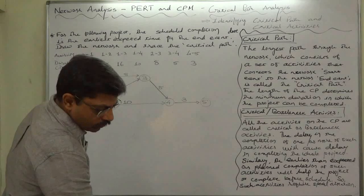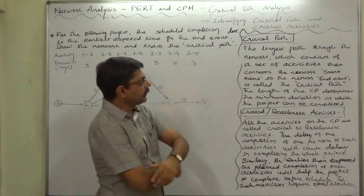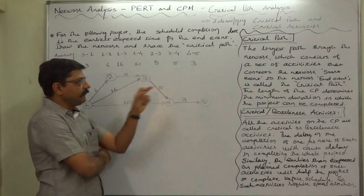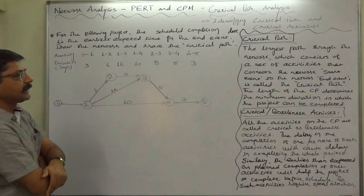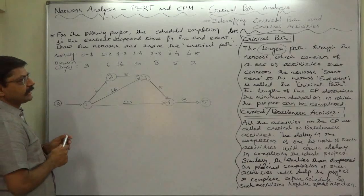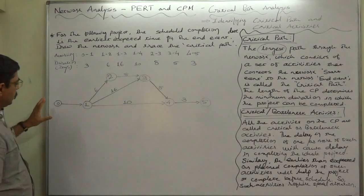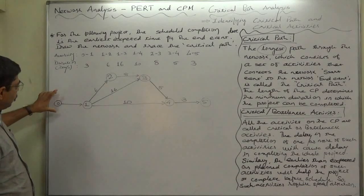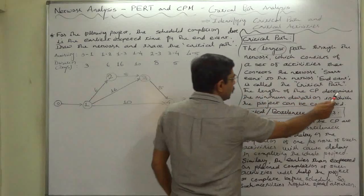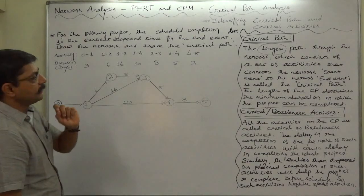Now the new point — the first is critical path. What is critical path? The longest path through the network, which consists of a set of activities that connects the network start event to the network end event, is called the critical path. The longest path covering various activities from start to finish of the project determines the minimum duration in which the project can be completed.